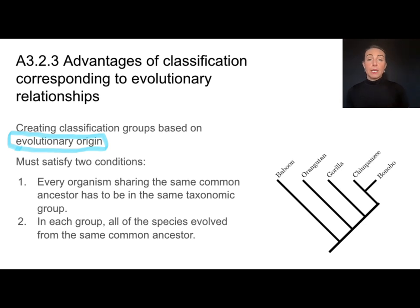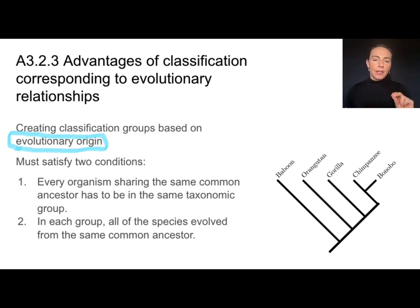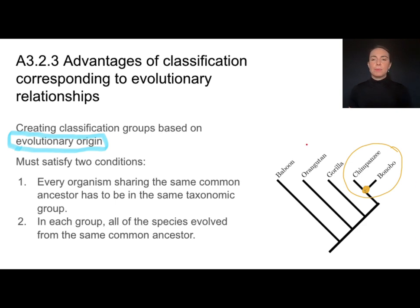When classifying things based on evolutionary origin, we have to keep two things in mind. First, if two organisms share a common ancestor — like the chimpanzee and the bonobo — they must be in the same taxonomic group, such as mammals and primates. Second, within a group, all species must come from the same common ancestor. These principles are the basis for building cladograms, which are diagrams based entirely on common ancestry.